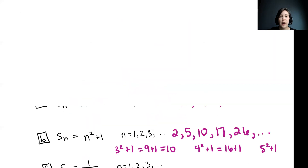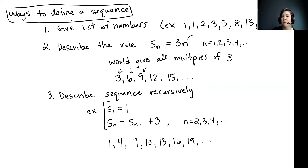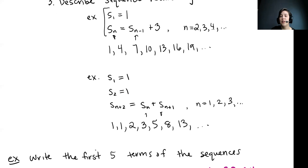To recap: we saw a few different ways to define a sequence. We can list out a bunch of terms, give an explicit rule where the rule depends only on n and constants, or define the sequence recursively where each term is written as a function of one or more previous terms. With the Fibonacci sequence, the (n+2)th term depends on both the nth and (n+1)th terms. That's your introduction to sequences — in the next video we'll talk about convergence of sequences.